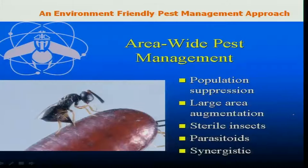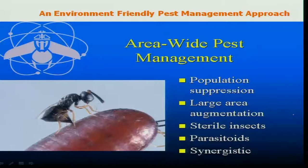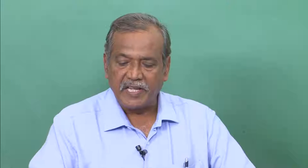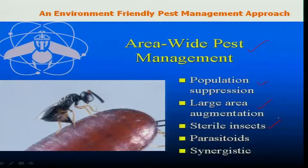Another requirement in radiation technologies is that it must be done on an area-wide basis. It cannot simply be implemented on 1 acre or 10 acres — at least 100 hectares or 250 acres are needed. The SIT technique becomes successful only when done area-wide, because population suppression should take place on an area basis. We need to augment larger areas and produce sterile insects coupled with parasitoids, synergistic with other methods, particularly chemical control.